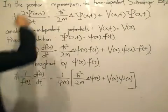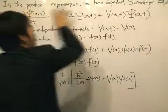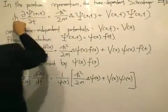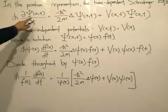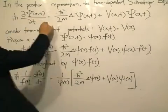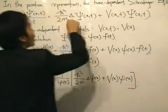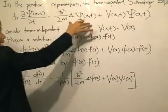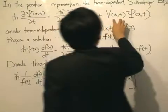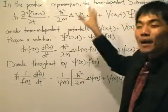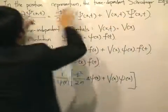In the position representation, the time-dependent Schrödinger equation is given by this equation: i times ħ (h-bar reduced) of the time partial derivative of the wave function in terms of x and t, equals minus ħ² divided by 2m, the Laplacian operator on that wave function, plus the potential V(x,t) — because the potential can evolve with time. That's why it's called the time-dependent Schrödinger equation.